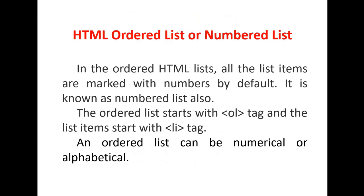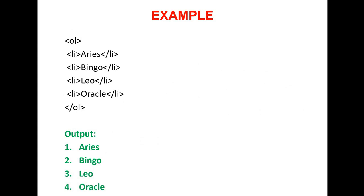The first type is the ordered list. In HTML, the ordered list is also known as the number list, and it is the default list in HTML. The ordered list starts with the OL tag and the list items start with the LI tag. OL stands for ordered list and LI stands for list item. An ordered list can be numerical or alphabetical.